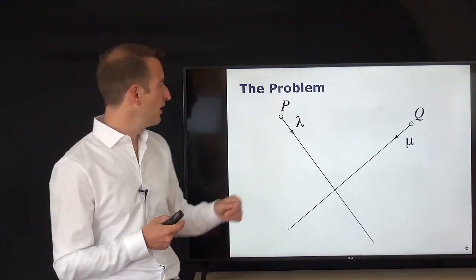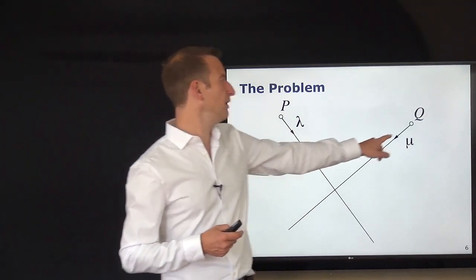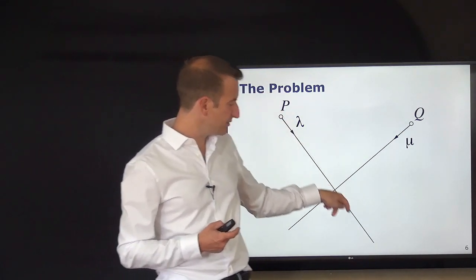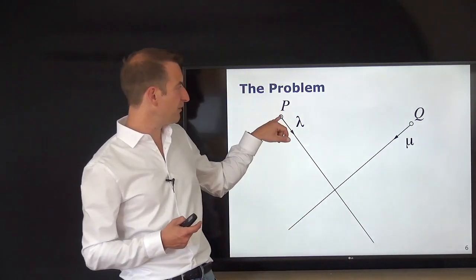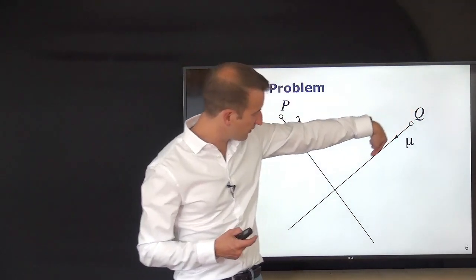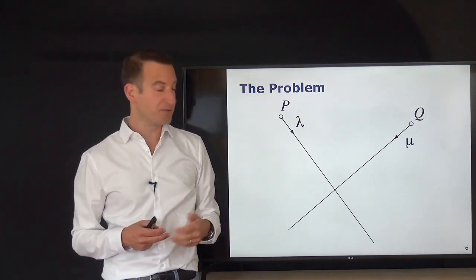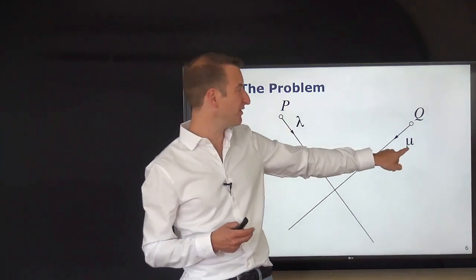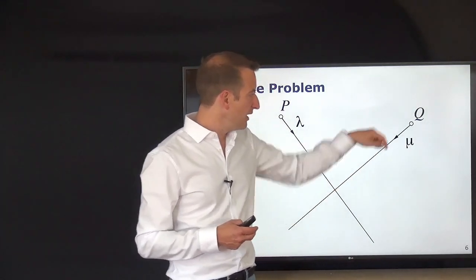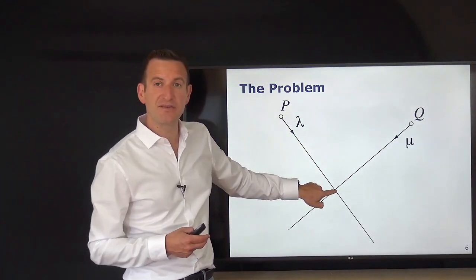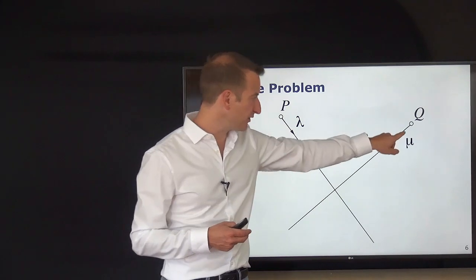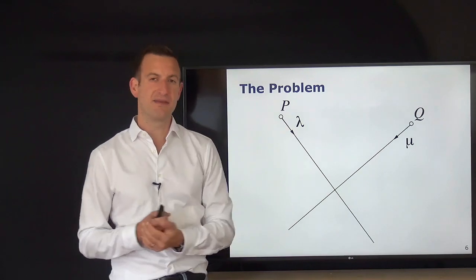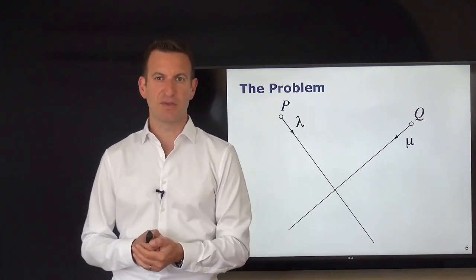We have two cameras: one camera located at point P, one at point Q. We have the rays — the ray seen from location P and the ray seen from location Q — and direction vectors with scalars lambda and mu, which are the lengths along those direction vectors to get to the intersecting point. What we want to do is find this intersection.